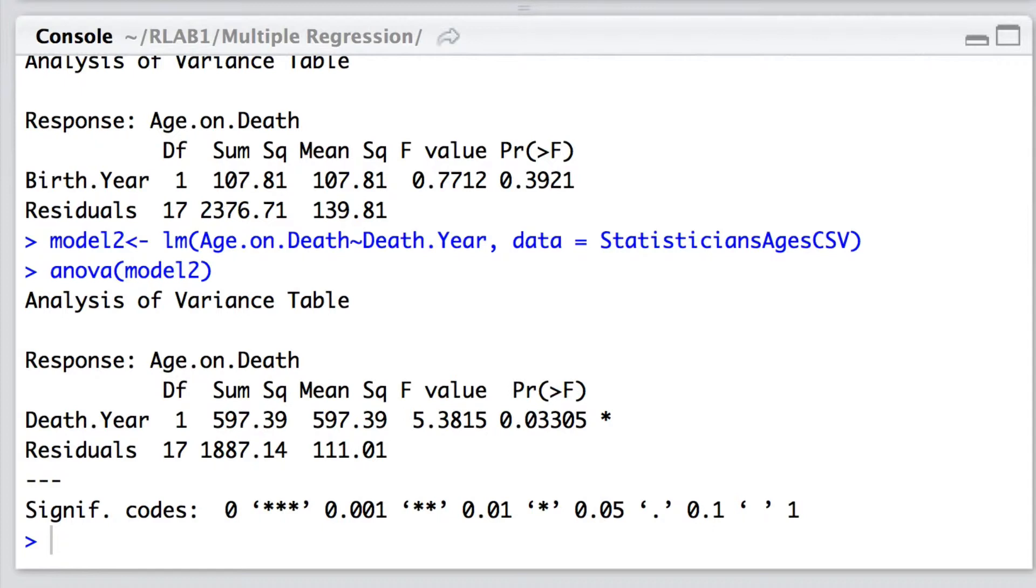And here we see that we can indeed reject the null hypothesis that there is no relationship between age on death and death year, in that the probability of us obtaining that test statistic or a more extreme if the null hypothesis is true is really very small.